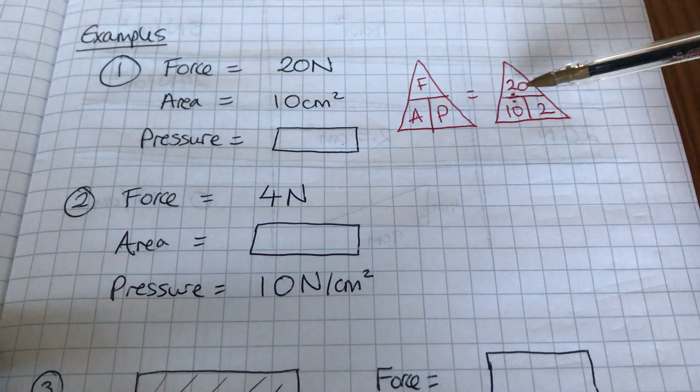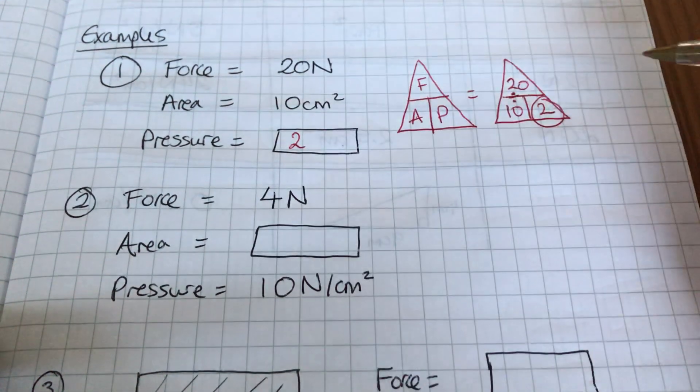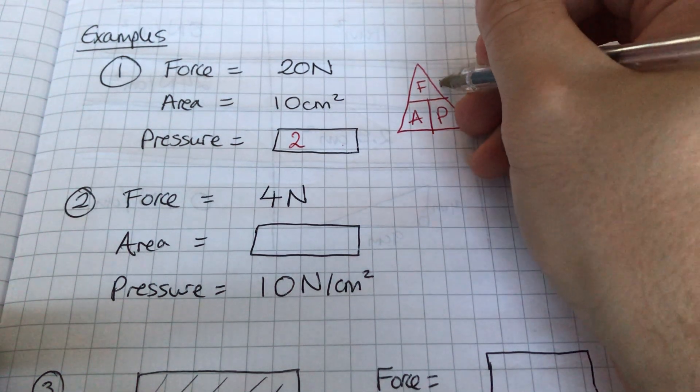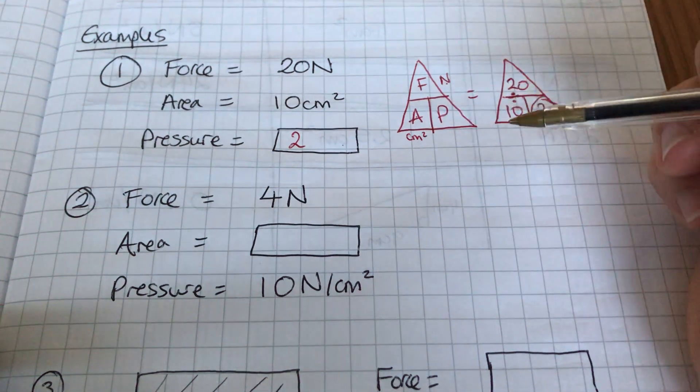That tells me that my answer is 2, but I can also work out the units by thinking well I've got newtons on the top there and centimeters squared there, so I do newtons divided by centimeters squared, newtons over centimeters squared just like that.